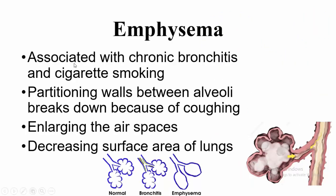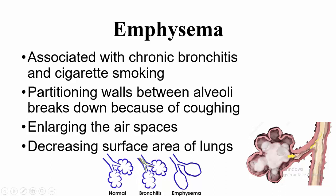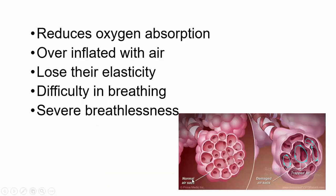What is emphysema? Emphysema is associated with chronic bronchitis and cigarette smoking. In emphysema, the partitioning walls between the alveoli break down. It enlarges the air spaces between the alveoli and decreases the surface area of the lungs because the partitioning walls are broken down between the alveoli. This is the normal alveoli, bronchitis alveoli with narrowing of the air passage, and emphysema alveoli whose surface area is decreased. If surface area is decreased, it reduces oxygen absorption. The alveoli become over-inflated with air and lose their elasticity, and the person feels difficulty in breathing.